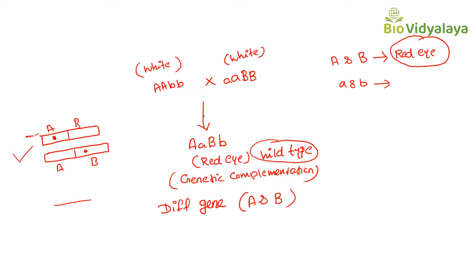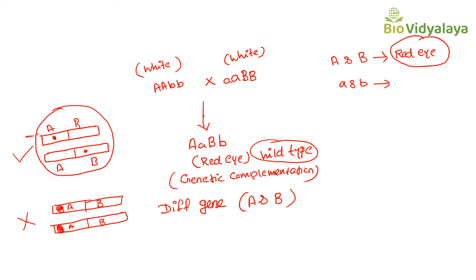To summarize: if mutations are present in different genes, there is complementation. If mutations are present in the same gene, there is no complementation. Remember this rule: if complementation occurs, mutations are in two different genes. A group of mutants which do not complement each other belong to a single complementation group.